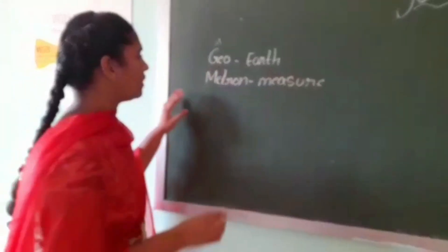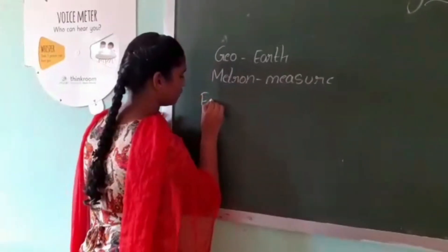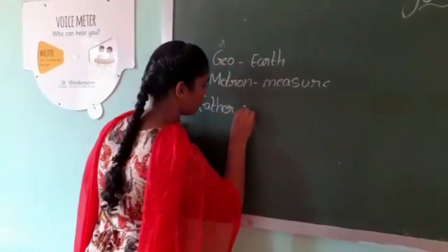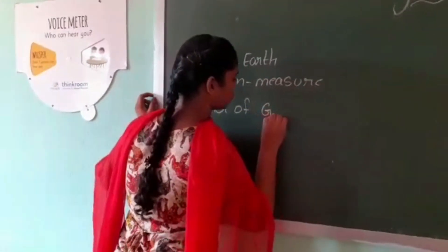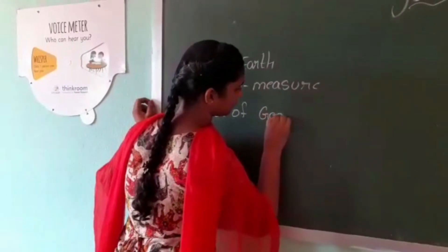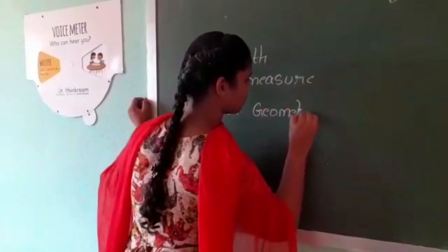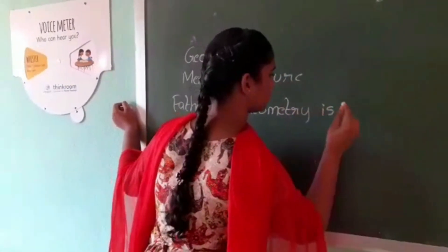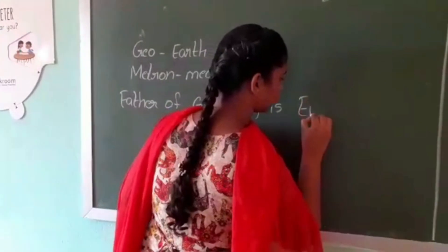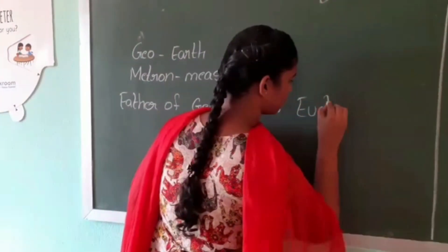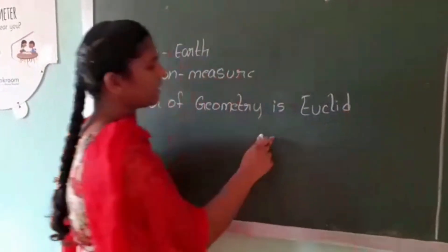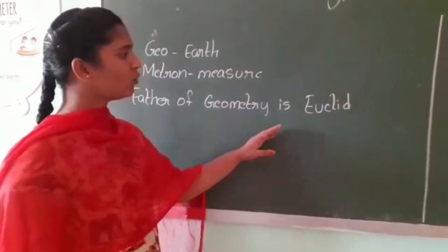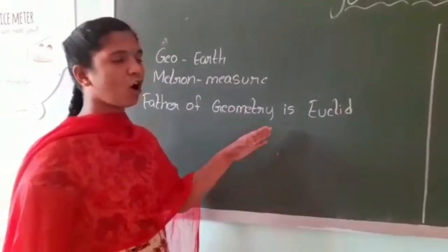The father of geometry is Euclid. He is an ancient Greek mathematician who wrote the book called 'The Elements'.